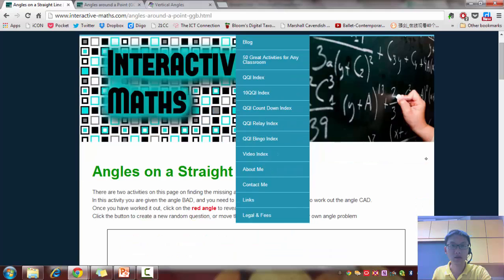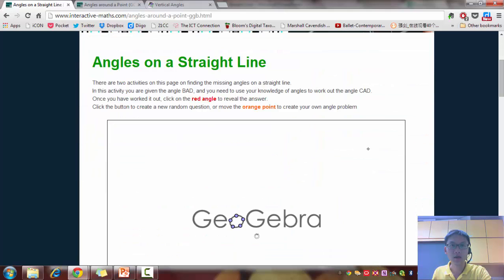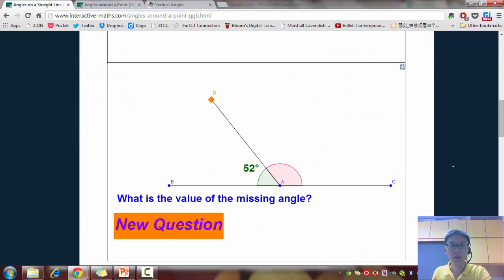So this is how the website looks like. These angles on the straight line. And you can actually play around with the angles, to move it. And if you click on this red part here, they will show you the missing angle.